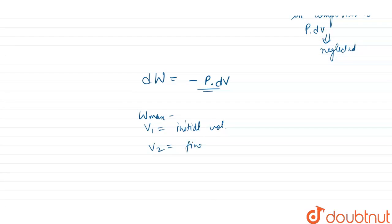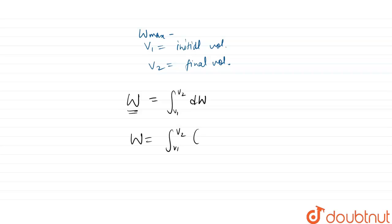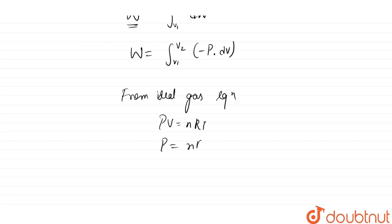So work done equals the integral from V1 to V2 of dW, which in the reversible expansion case becomes the integral from V1 to V2 of minus P·dV. From the ideal gas equation, PV = nRT, so P = nRT/V, and we integrate in terms of volume only.